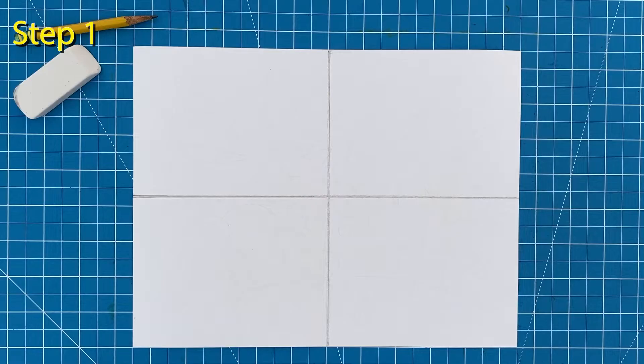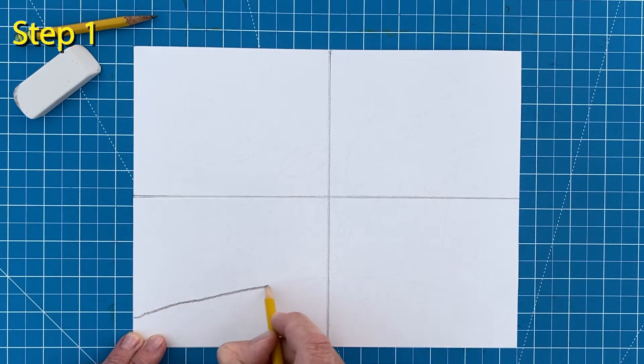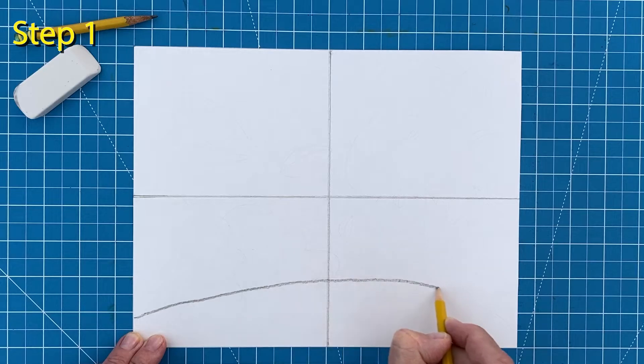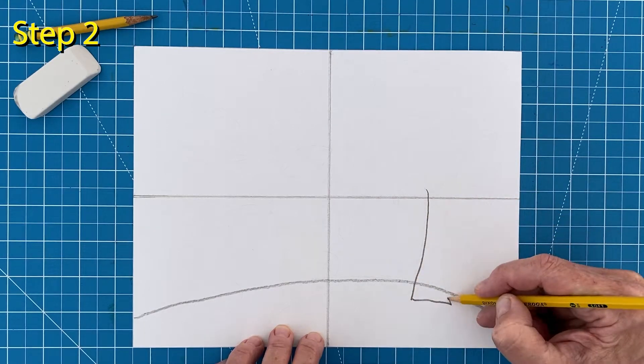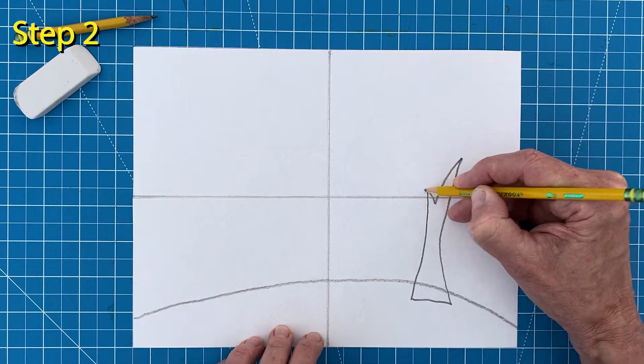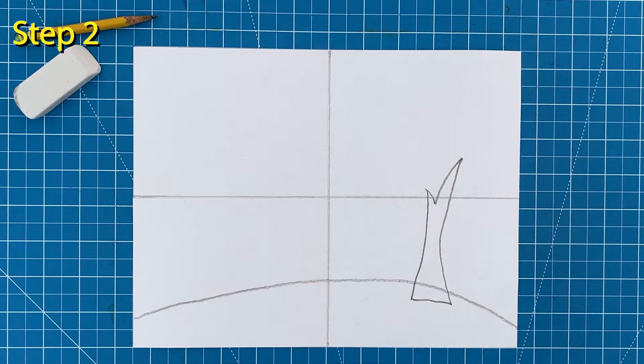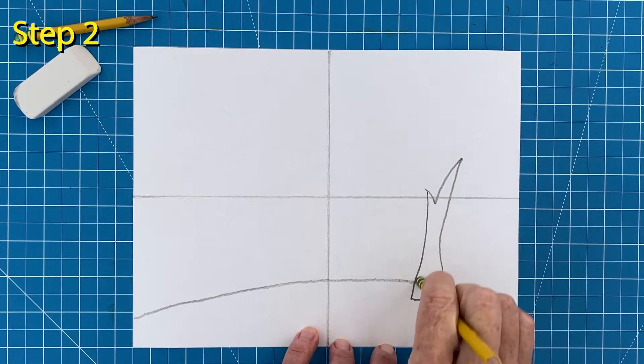Step number one. Start with the horizon line. You know they don't always have to be flat so try drawing one that is a little bit curved. Step number two. Draw a simple tree trunk on the right side and erase the inside line because the tree is in front of the horizon line.